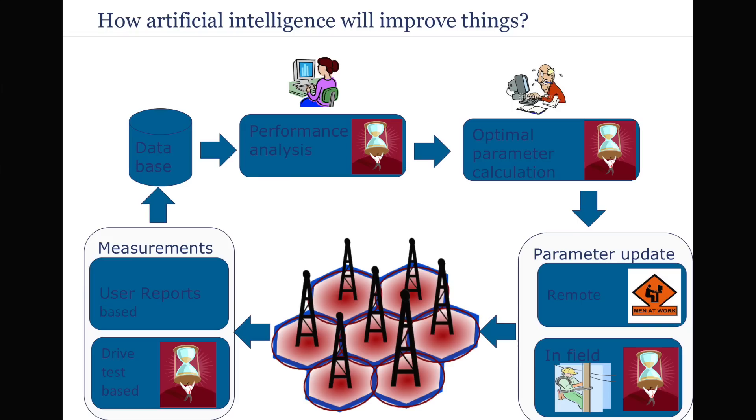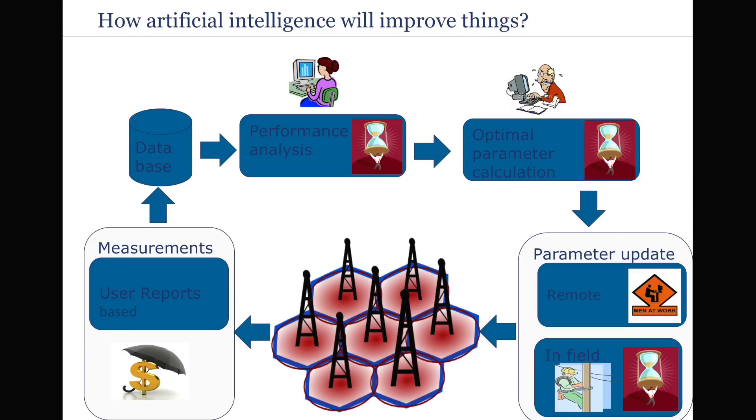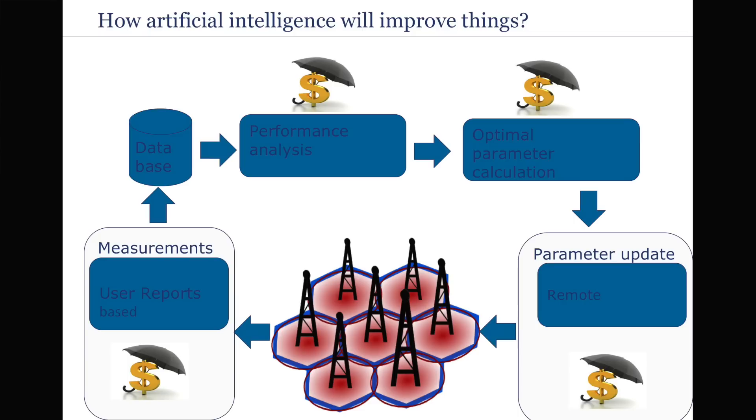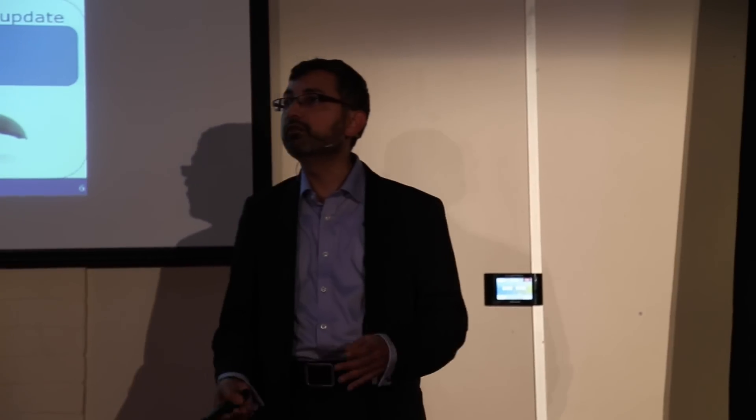How things can change if we bring in artificial intelligence into the network? First of all, you would not need any drive testing because all of the performance metrics will be gathered continuously and automatically. You do not need to have these performance analysis experts. You can have artificial intelligence modules which will do this analysis. You will have optimization algorithms which will actually optimize it online, and then these parameters can be directly fed into the network. All of these features save a lot of cost. It improves the running cost of the network, so operators can provide you the same service with much less cost.